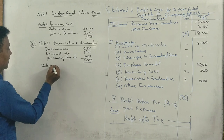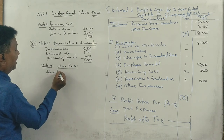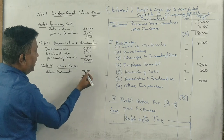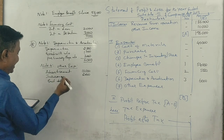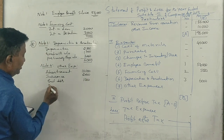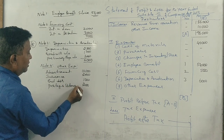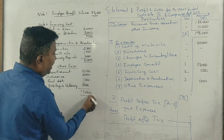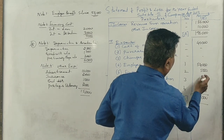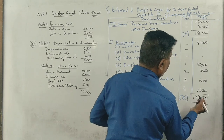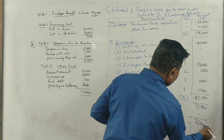Next, other expenses: advertisement $10,000, insurance $2,000, then $1,000, $1,000, $2,000, $2,000, $3,000, $1,000 — total other expenses $15,000. Overall total comes to $6,000. Net profit after tax is also $76,000.